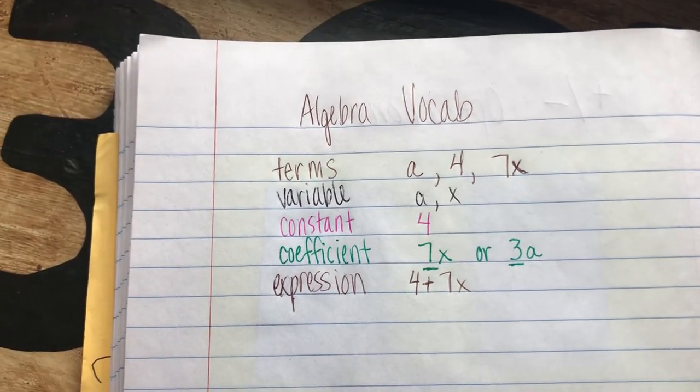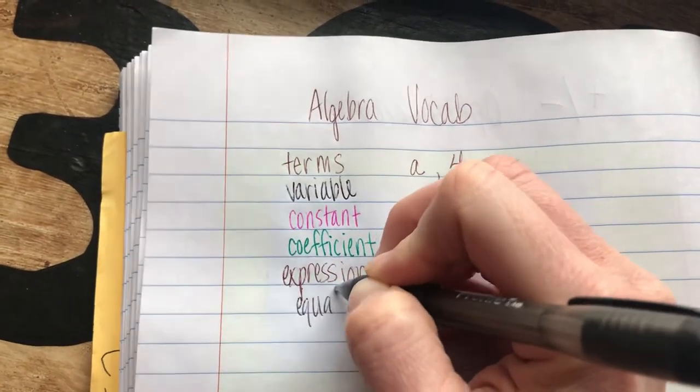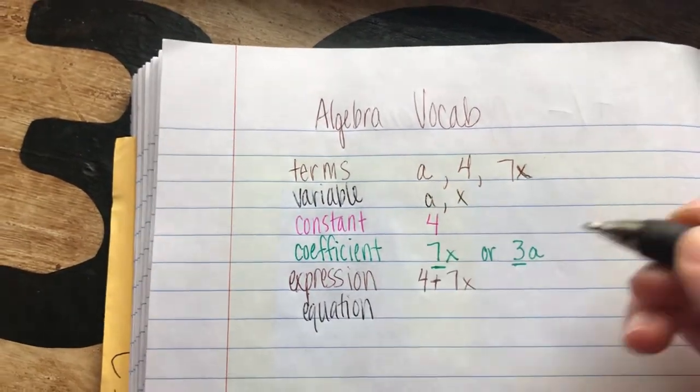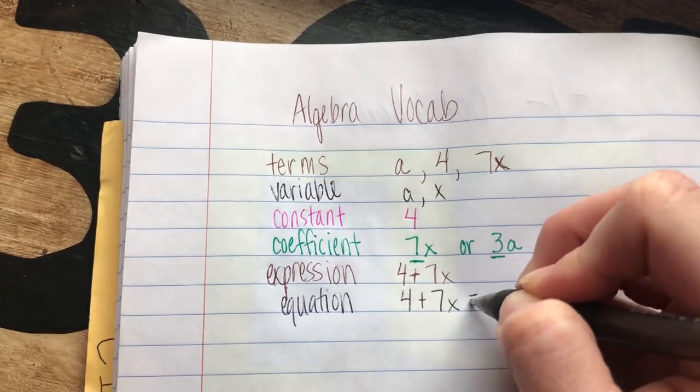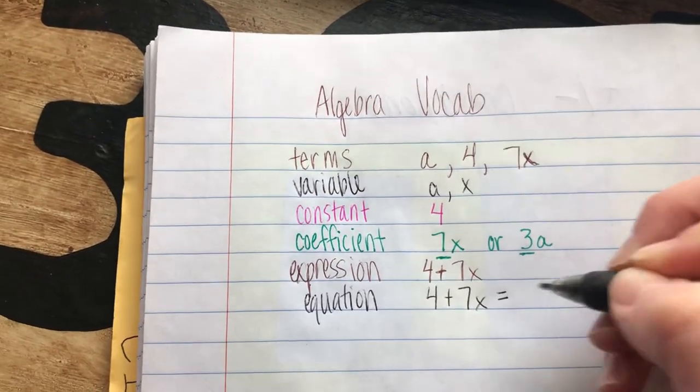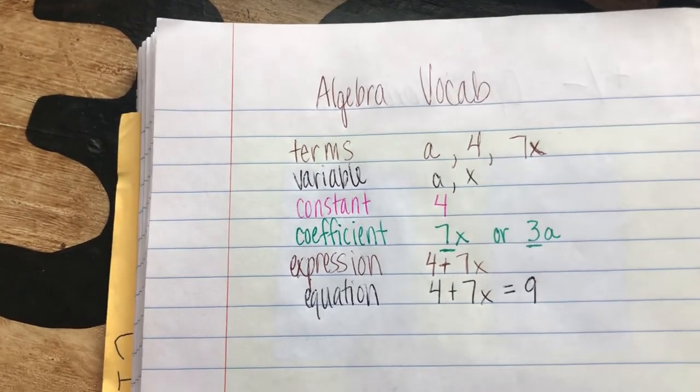Then there's also equation. An equation is like an expression, but it has an equal sign and something on the other side. So like 4 plus 7x equals 9—that's an equation.